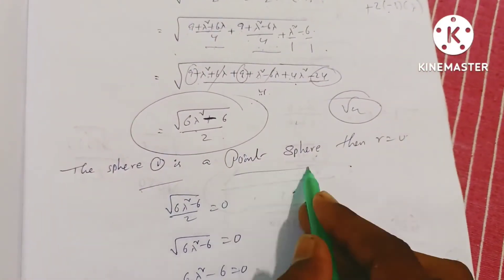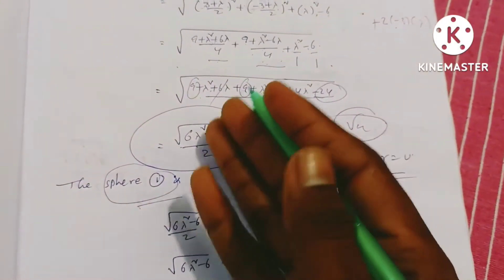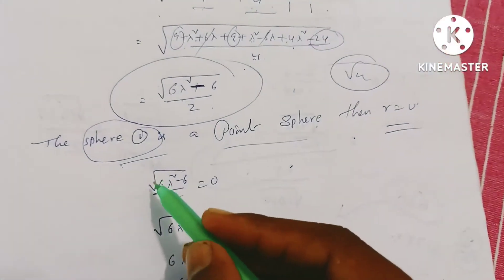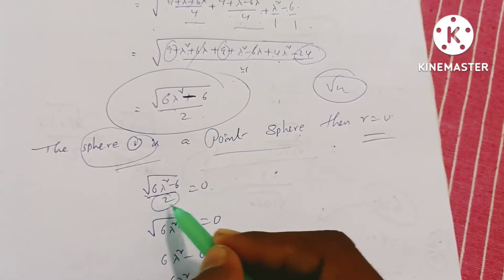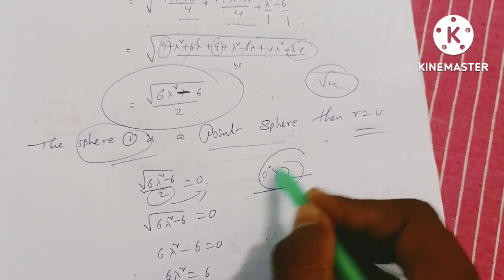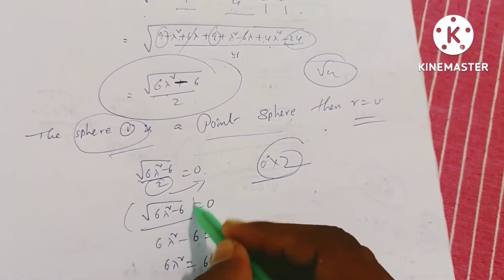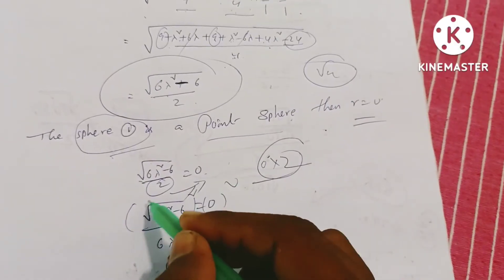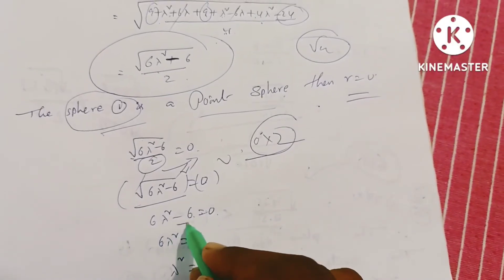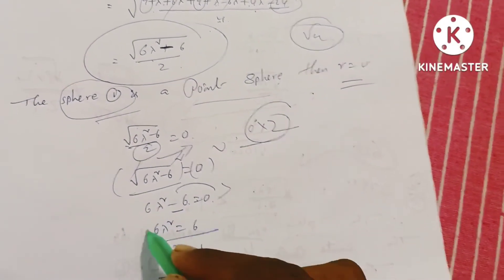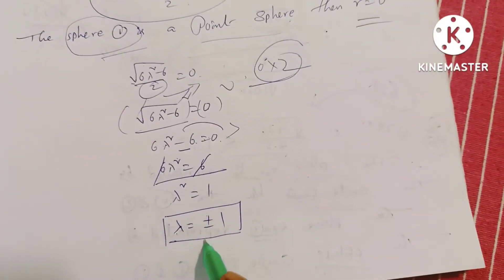For the sphere to be a point sphere, the radius equals zero. So root over (6 lambda squared minus 6) by 2 equals zero. Squaring both sides: 6 lambda squared minus 6 equals zero. Therefore 6 lambda squared equals 6, giving lambda squared equals 1. So lambda equals plus or minus 1.